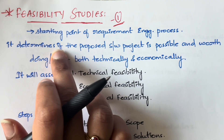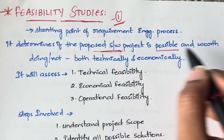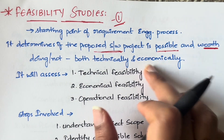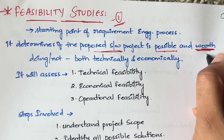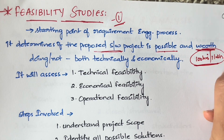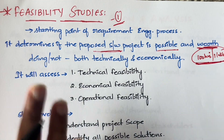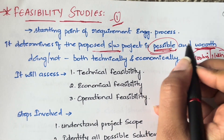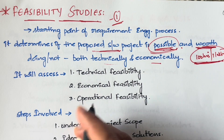The feasibility study will determine whether the proposed software project is possible to do or not, and whether it is worth doing or not — both technically and economically. For example, if you are spending a hundred hours and one lakh rupees on a project, the feasibility study determines whether it is really worth spending that much time and money, and whether it is actually possible to build at all.